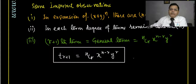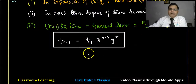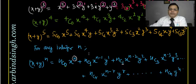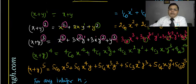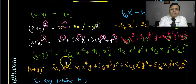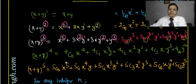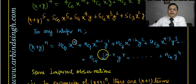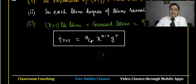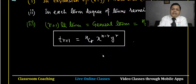One more important thing: the coefficients follow a pattern. When power is 1, coefficients are 1, 1; power 2 gives 1, 2, 1; power 3 gives 1, 3, 3, 1. This pattern comes through Pascal's triangle. Let me define Pascal's triangle here.